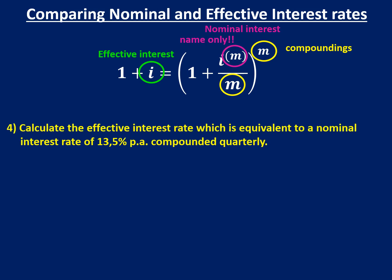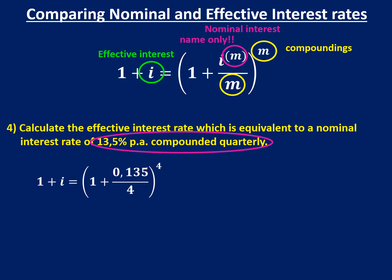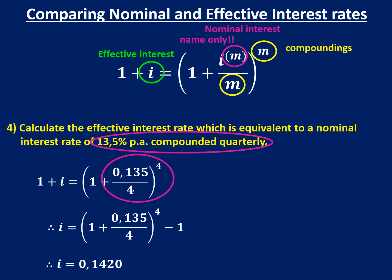Let's look at an example. We want to calculate the effective interest rate — the one on the left-hand side — that is equivalent to a nominal interest rate of 13.5% compounded quarterly. Since it's compounded quarterly, we divide by 4 and use an exponent of 4. The number of years is irrelevant and isn't even given. Calculating the right-hand side gives a bracket to the power of 4, then subtract 1, giving 0.1420. Expressed as a percentage, that's 14.2%. So if the bank tells you you'll earn 13.5% compounded quarterly, you're actually going to earn 14.2%.